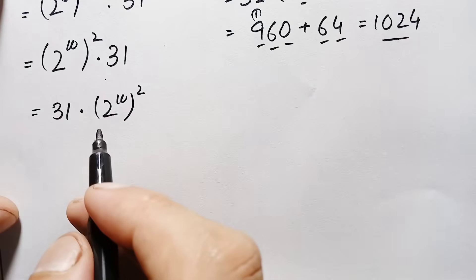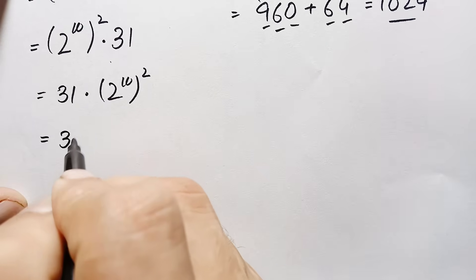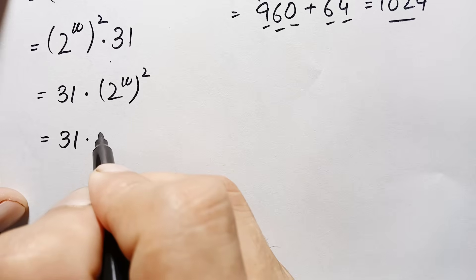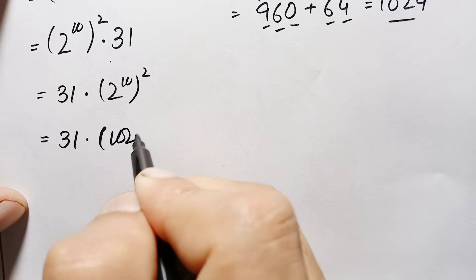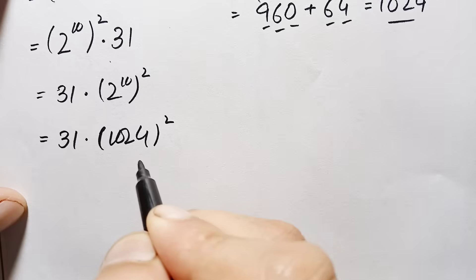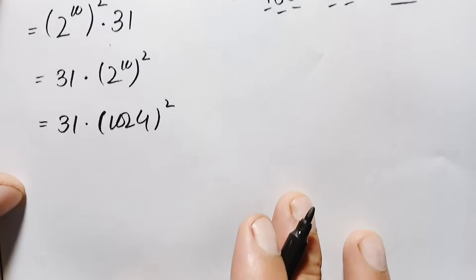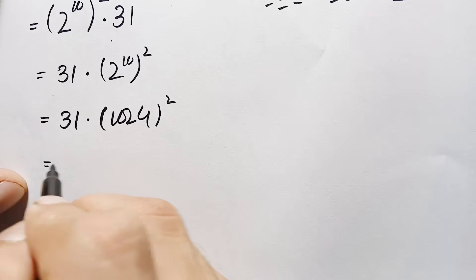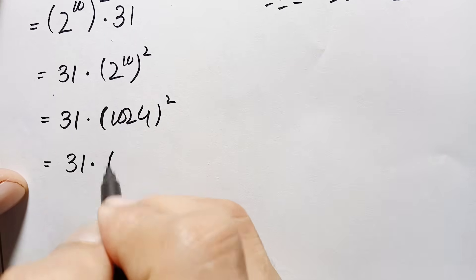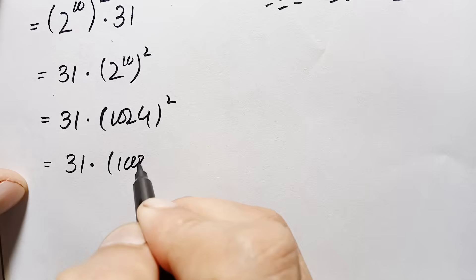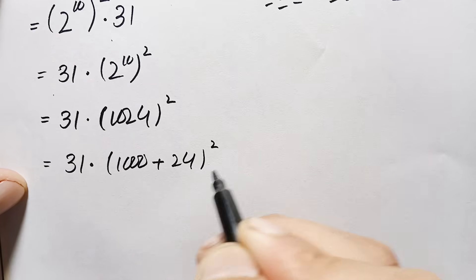Now we replace 2 raised to power 10 with 1024. This gives us 31 times 1024 whole squared. We need to find the value of this number squared, so we write 1024 as the sum of 1000 plus 24, whole squared.